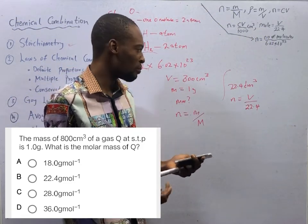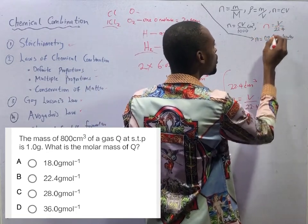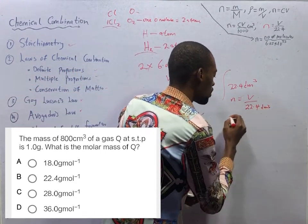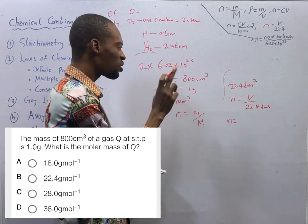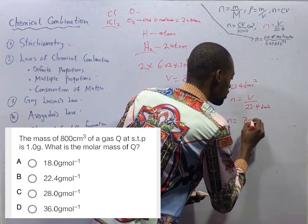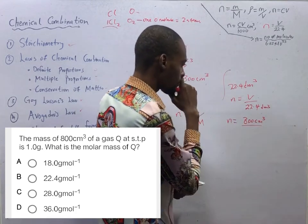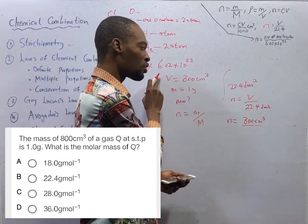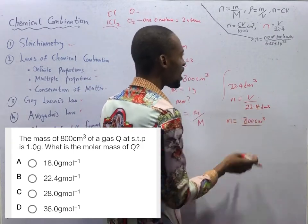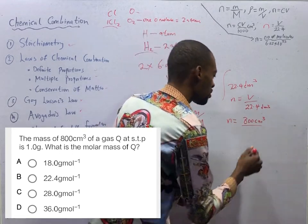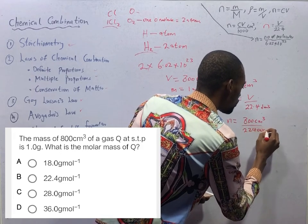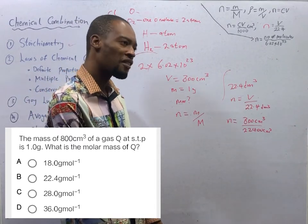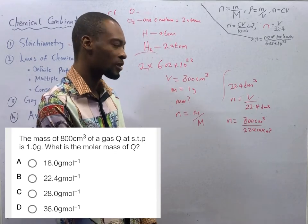Since this gas is at standard temperature and pressure, we can say that the number of moles is equal to volume over 22.4 dm³. Which means the number of moles is equal to 800 cm³ over, since we are given volume in dm³ and the volume here is in cm³, we need to convert this standard volume to cm³. How do we do that? We multiply by 1000. So, this will give you 22400 cm³. To convert from dm³ to cm³, you multiply by 1000. To convert from cm³ to dm³, you divide by 1000.